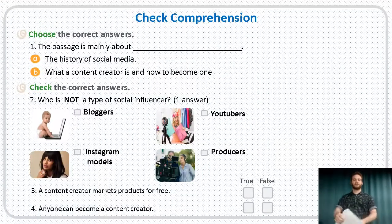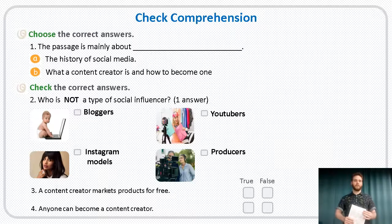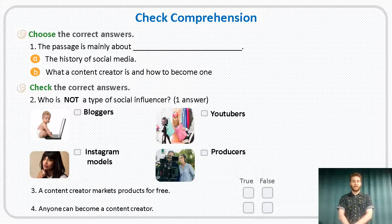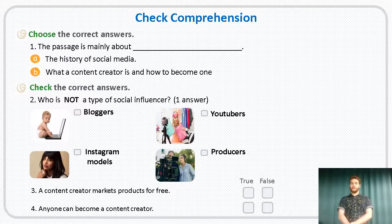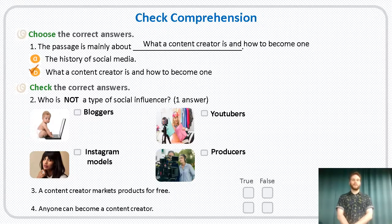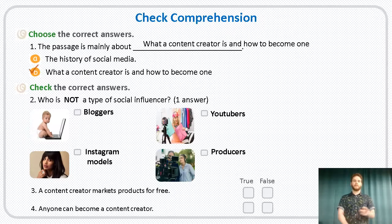All right, let's go with the first part of the comprehension check. That's number one: the passage is mainly about — A, the history of social media, or B, what a content creator is and how to become one. The answer is B, that's right — what a content creator is and how to become one.